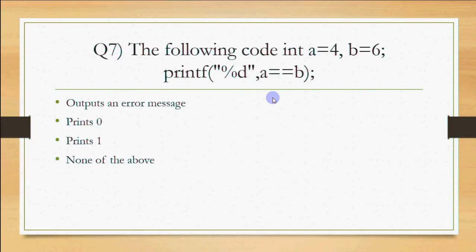We are checking if 4 equals 6. It does not, so the result is false. In C language, false means 0 and true means 1 (or any non-zero number). Since the condition is false, the answer is it prints 0.